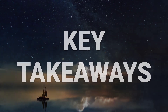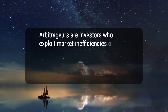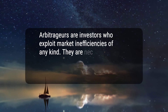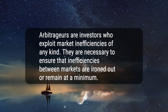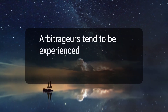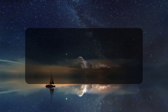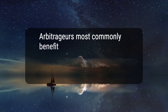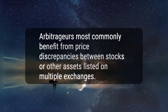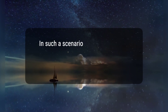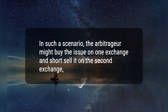Here are four key takeaways. 1. Arbitrageurs are investors who exploit market inefficiencies of any kind; they are necessary to ensure that inefficiencies between markets are ironed out or remain at a minimum. 2. Arbitrageurs tend to be experienced investors and need to be detail-oriented and comfortable with risk. 3. Arbitrageurs most commonly benefit from price discrepancies between stocks or other assets listed on multiple exchanges. 4. In such a scenario, the arbitrageur might buy the issue on one exchange and short sell it on the second exchange, where the price is higher.